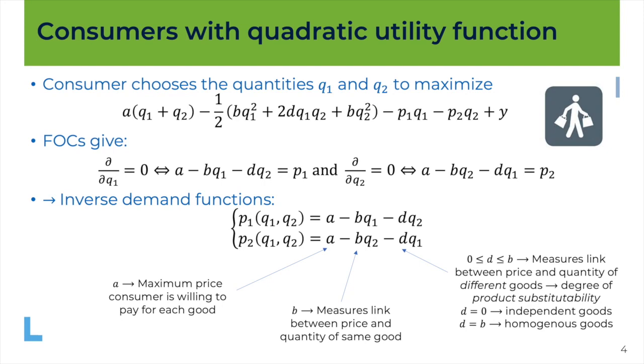At the other extreme, if d is equal to b then the two goods would be homogeneous in the sense that they cannot be distinguished from one another. What is coming from firm 1 or what is coming from firm 2 is exactly the same good.